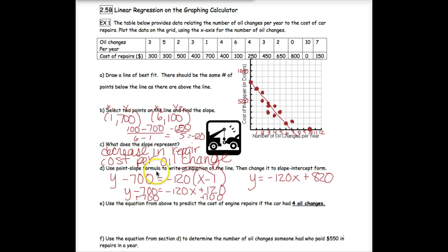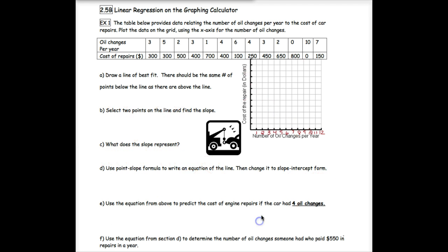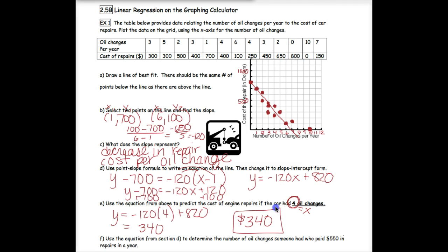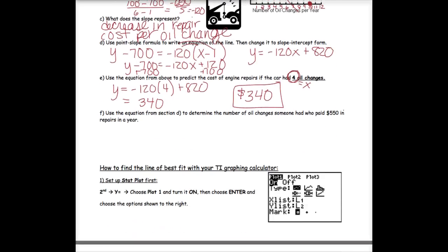Use the equation from above to predict the cost of engine repairs if the car had four oil changes. That means I'm taking my equation and plugging in 4 for x. So y equals negative 120 times 4 plus 820. When you plug that in, that is going to give you 340. So that means we would expect about $340 to be spent on repairs for a car that had four oil changes.